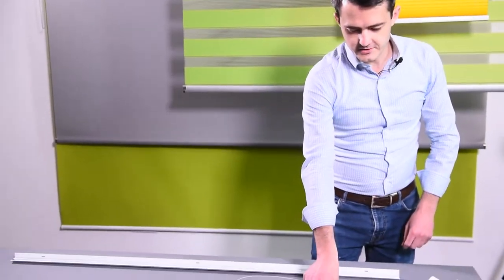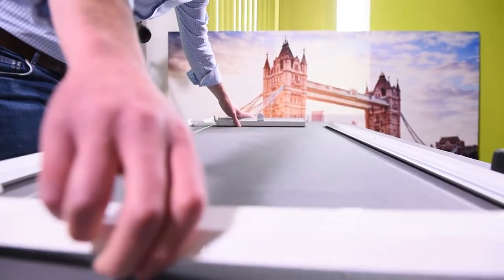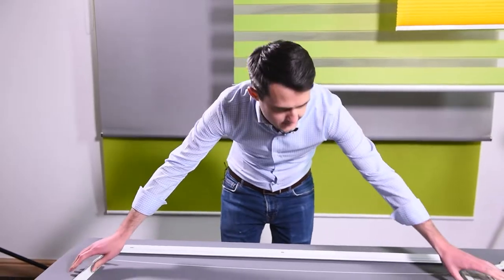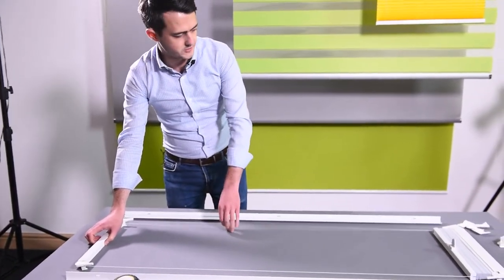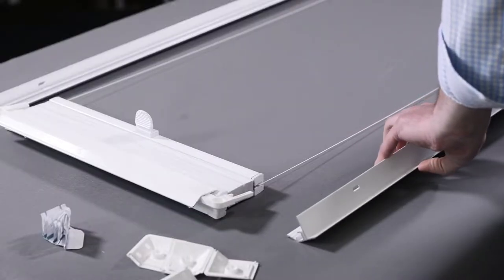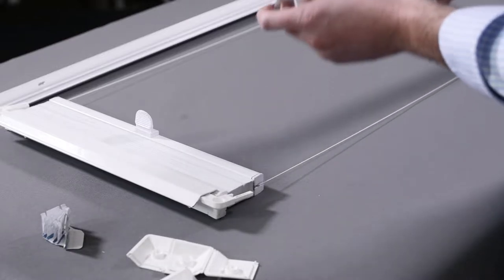So the first thing to do is to take the bottom rail and normally speaking these cords would be wrapped up for transit, so just unwrap them very carefully and put the bottom rail as far as it will go so you can see the cords are taut there. Then take our side profiles and simply slide in.